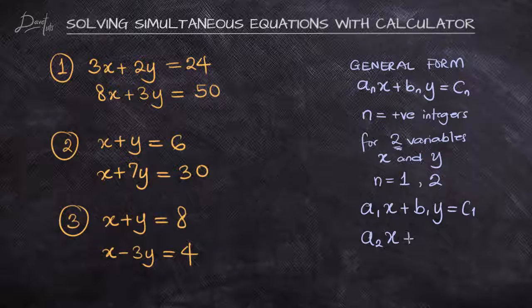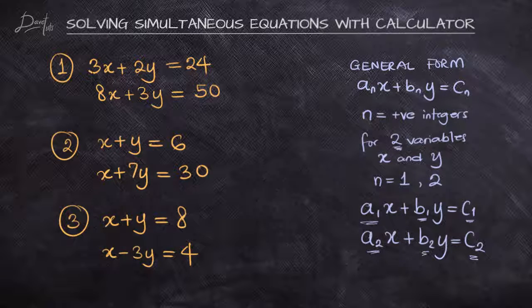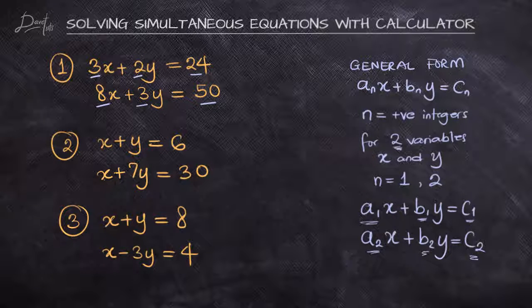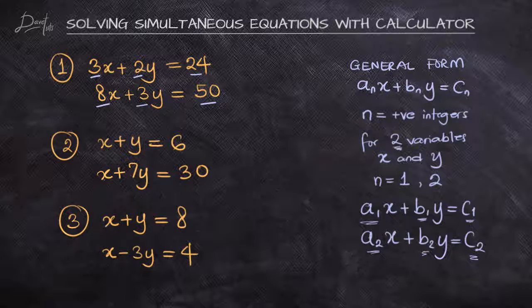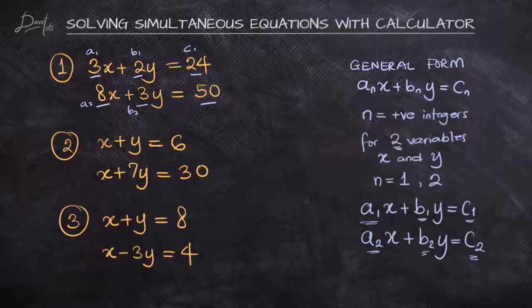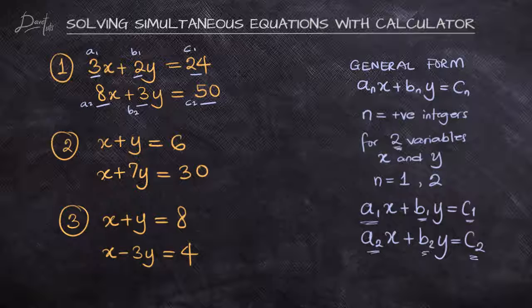Since this is the general format, we can easily relate it with our questions. In this first question, we can see that 3 and 2 are the coefficients of x and y in the first equation, and 8 and 3 are the coefficients of x and y in the second equation. This directly relates to a₁, b₁, and c₁. So a₁ will be 3, b₁ will be 2, c₁ is 24, a₂ will be 8, b₂ will be 3, and c₂ will be 50.